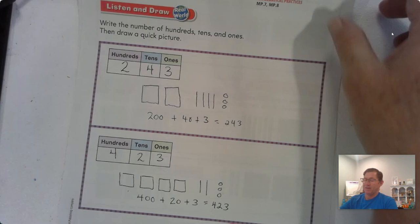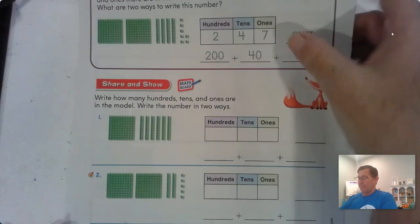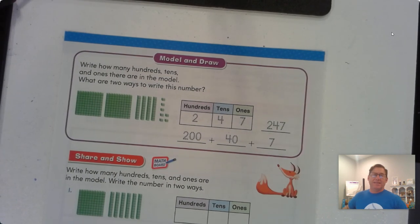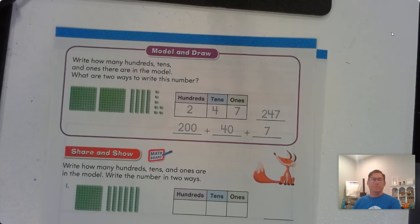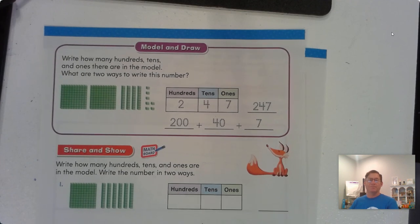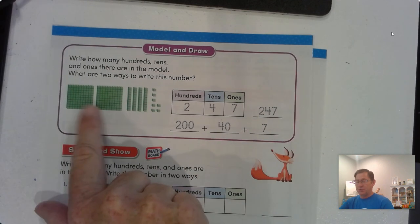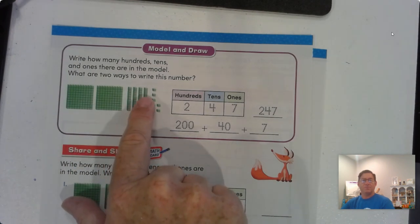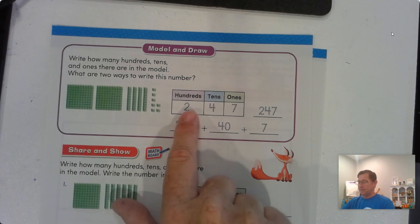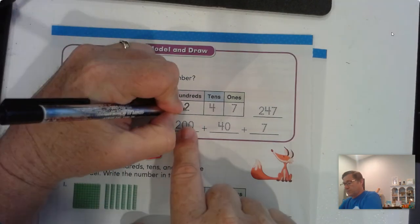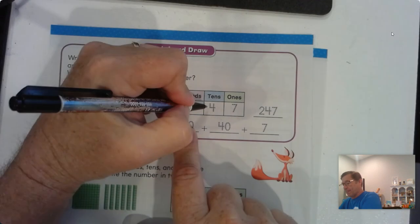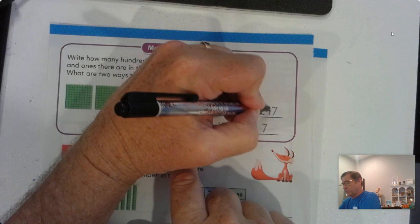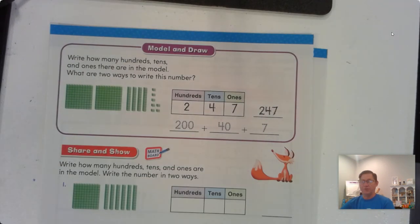All right. Let's look at page 70. Write how many hundreds, tens, and ones are in the model, and then what are two ways to write this number? Let's see. We have 200 blocks. We have 4 tens, and we have 2, 4, 6, 7 ones. So that's what they've written here. 2 hundreds, 4 tens, 7 ones, which we read as 247.